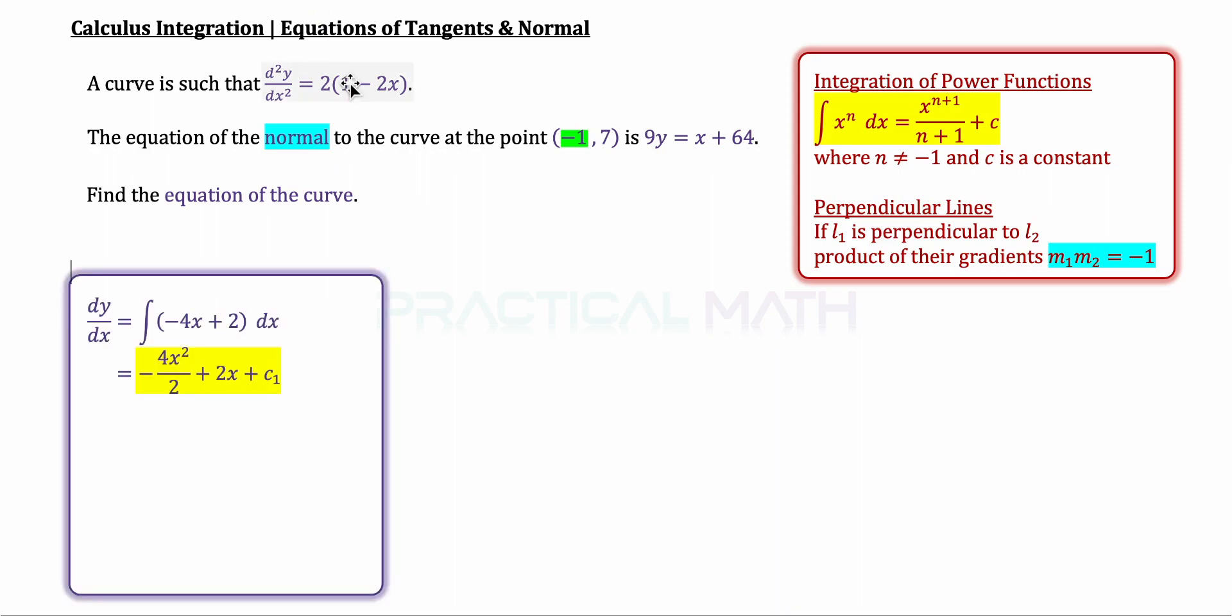In step 1, to find dy/dx, we have to integrate the function of d²y/dx² over here, which are expanded to give us -4x + 2. Now, integrating -4x will mean that -4x²/2. Integrating 2 should give us 2x, and c₁ refers to the arbitrary constant from this integration.